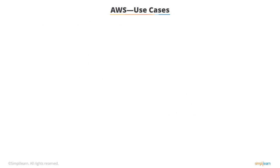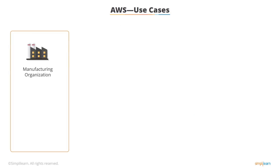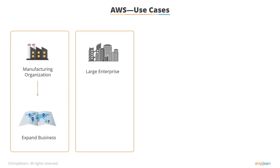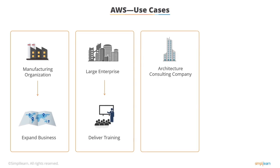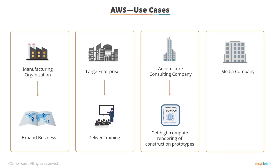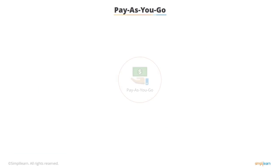There are many scenarios in which AWS is an efficient option for running web applications or organization portals. A small manufacturing organization can use its expertise in expanding its business through quality production while leaving IT management to AWS. A large enterprise spread across the globe can utilize AWS to deliver training to its distributed workforce. An architecture consulting company can use AWS to get high compute rendering of its construction prototypes. A media company can use AWS to provide different types of content such as videos, ebooks, and audio files to its worldwide customers.